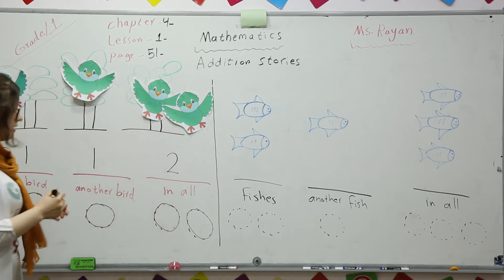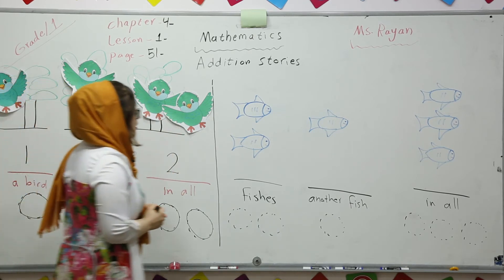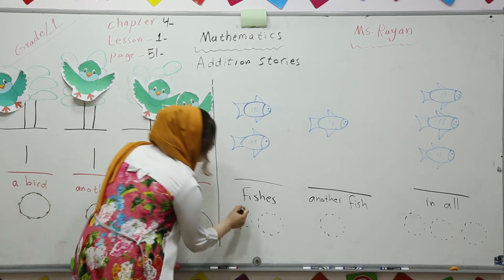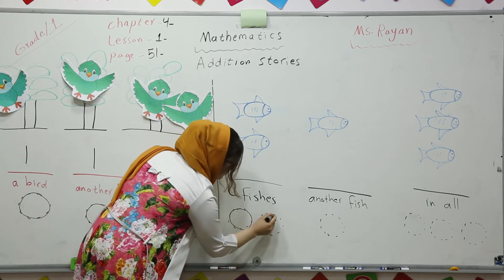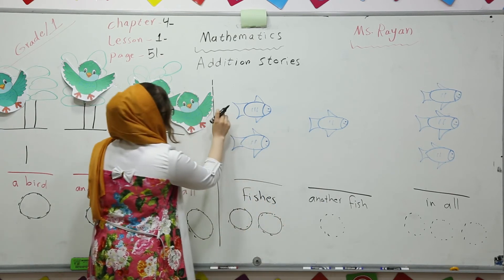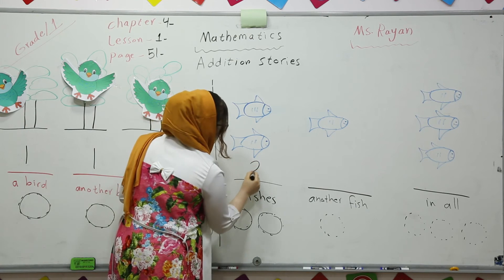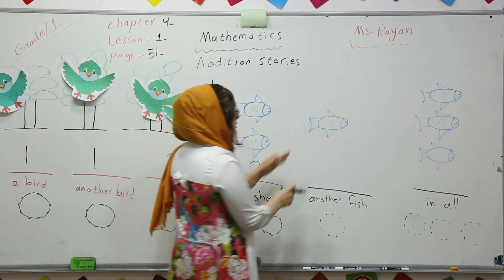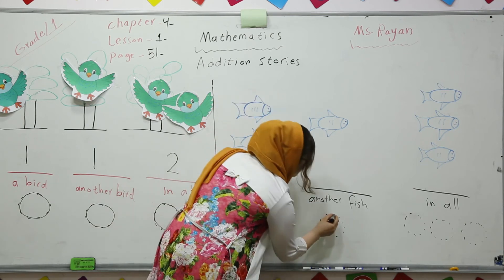We have got another example about fishes. In the sea we have got two fishes, so let's circle it. We have got two, one two, this is two. And another fish, one, only one fish.